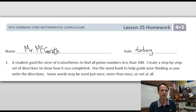So here we're just going to read the instructions and then we'll get on to the actual activity. The directions here are: a student use the sieve of Eratosthenes to find all prime numbers less than 100. Okay, so our job now is to create a step-by-step set of directions to show how it was completed. And they're giving us a little help: use the word bank to help guide your thinking as you write the directions. Now they don't want us to use this word bank blindly and just string these words together and have no idea what we're talking about. So they say, hey, some words may be used just once, more than once, or not at all. In other words, don't just put these all together in order and call that job done.